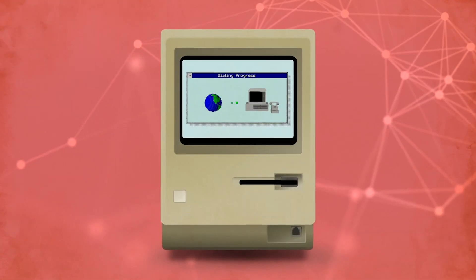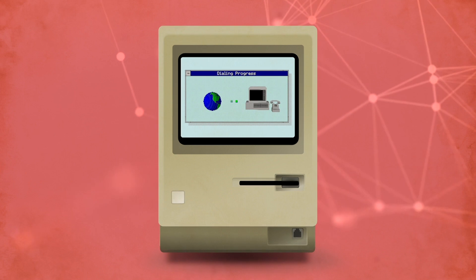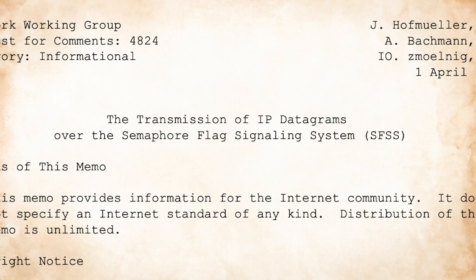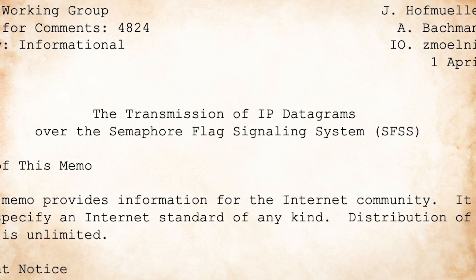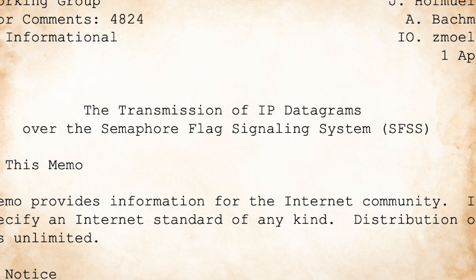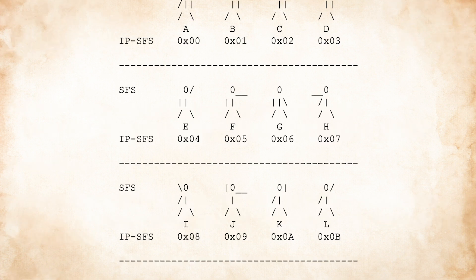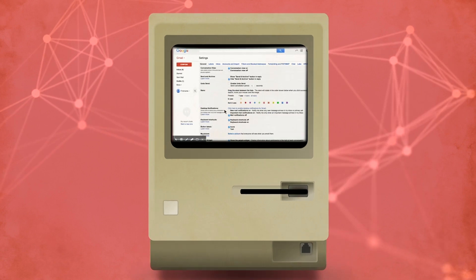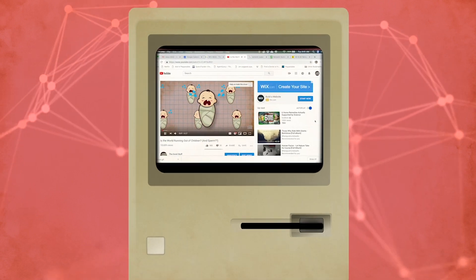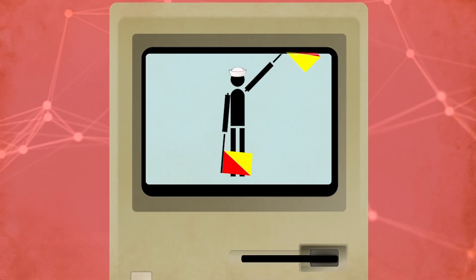Although today's internet doesn't rely on semaphore to communicate information, that doesn't mean it couldn't. In 2007, an astoundingly detailed April Fool's joke laid out the protocol for transmitting internet data via semaphore signals. An email, a website, even streaming video could all be sent using nothing more than a person waving a pair of flags.